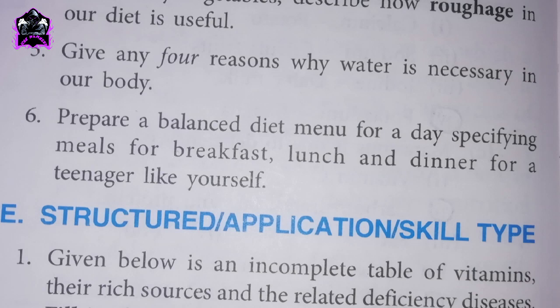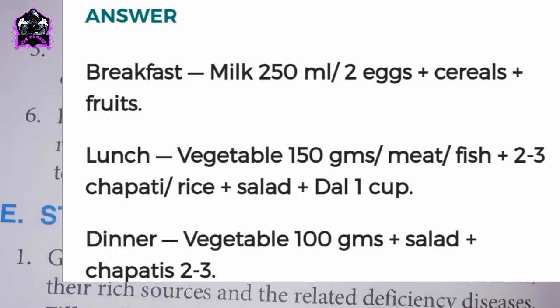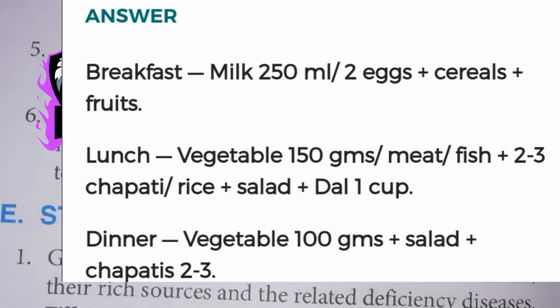Question: prepare a balanced diet menu for one day, specifying meals for breakfast, lunch, and dinner for a teenager. Breakfast: milk 250ml, 2 eggs, cereals, and fruits. Lunch: vegetables 150g, meat or fish, 2-3 chapatis, rice, salad, and dal 1 cup. Dinner: vegetables 100g, salad, and 2-3 chapatis.